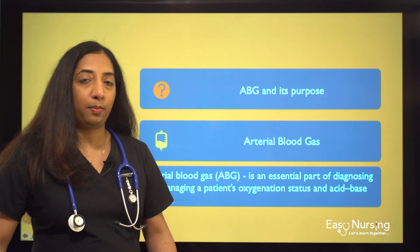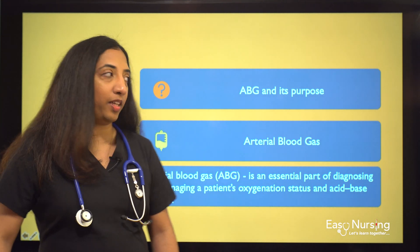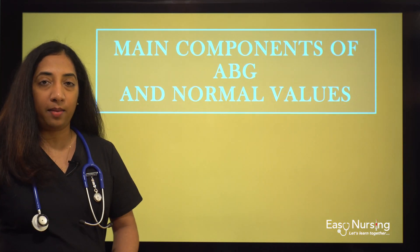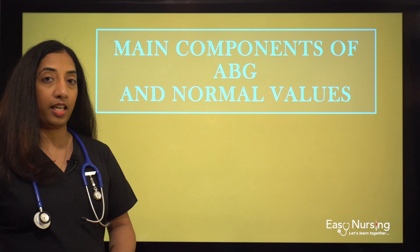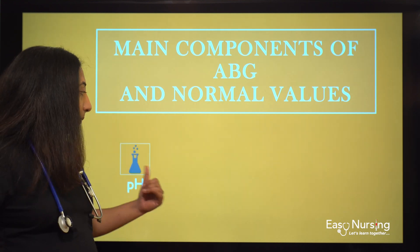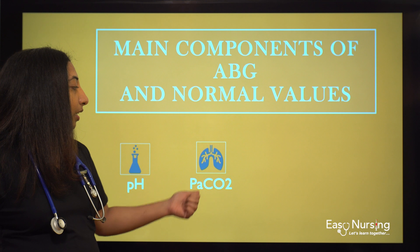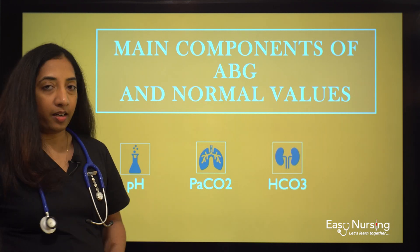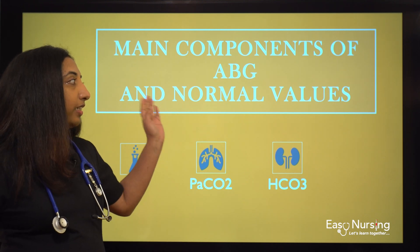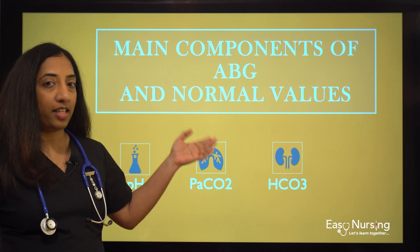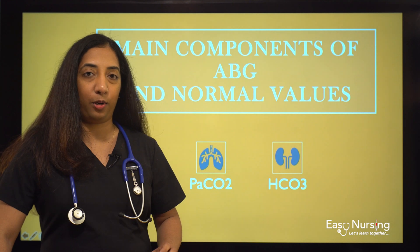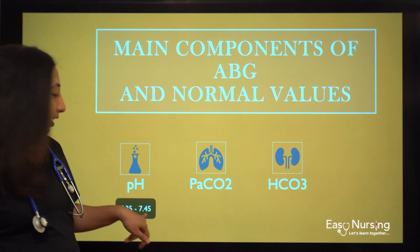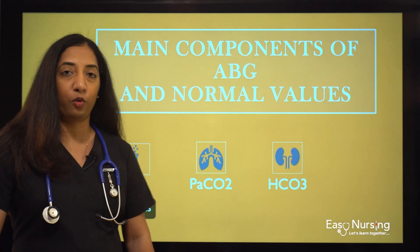How do we do this interpretation and what are the components we need? The main components of ABG for interpreting are pH, PaCO2 (or PCO2), and bicarb (HCO3). We have to memorize these normal values — it's very important. Write this down: the normal value of pH is 7.35 to 7.45.